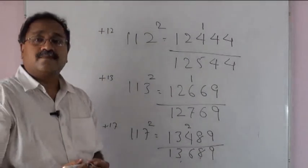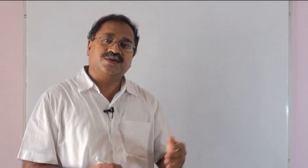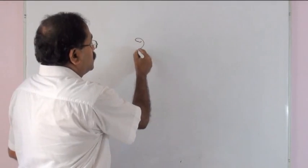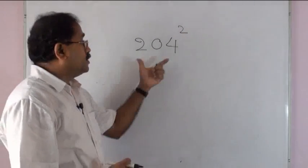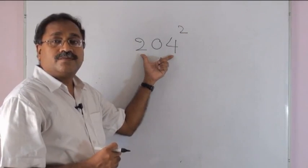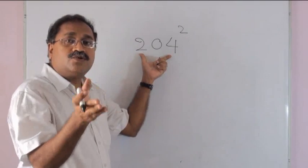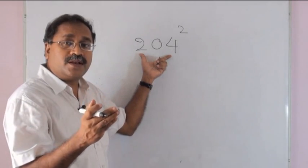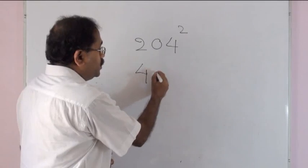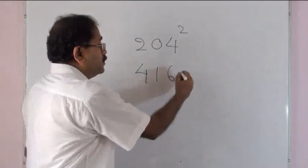If you need to find the square of a number closer to 200, there is also a shorter method. For 204 squared: 204 is 4 more than 200, so 200 plus 4 is 204, then double 204 to get 408 — wait, 204 plus 4 is 208, double 208 is 416, followed by 4 squared, which is 16. So 204 squared equals 41616.